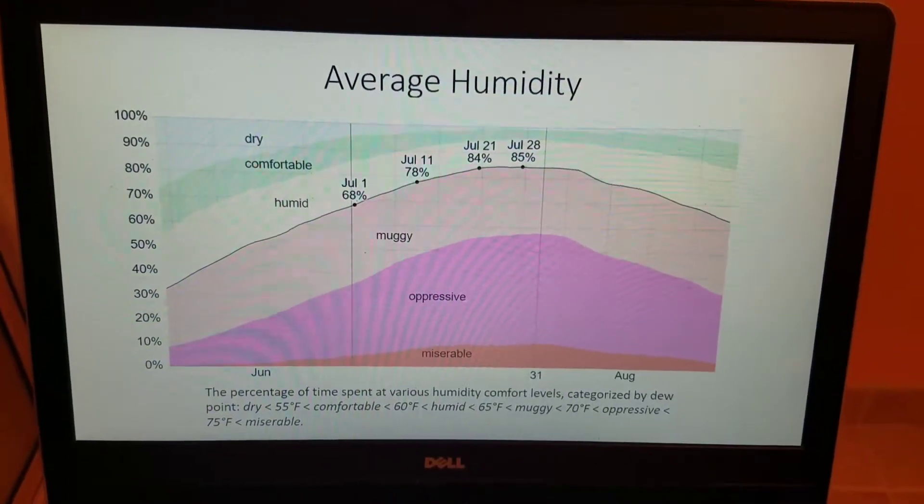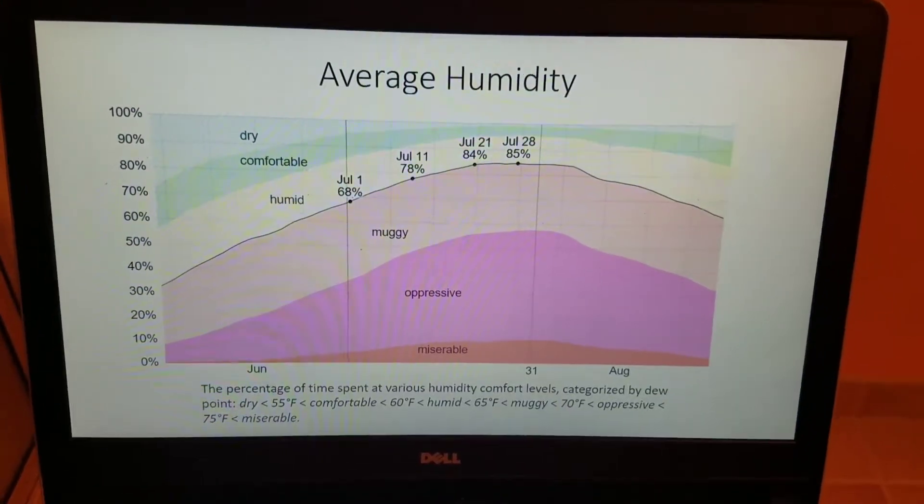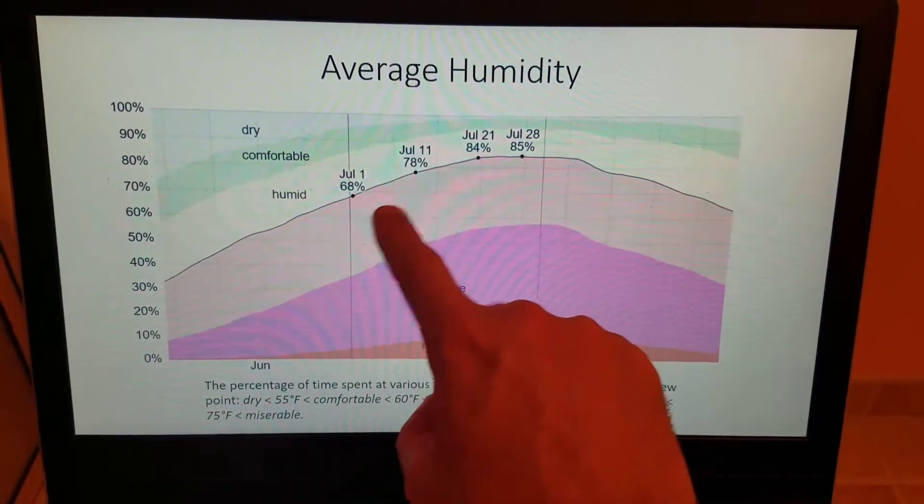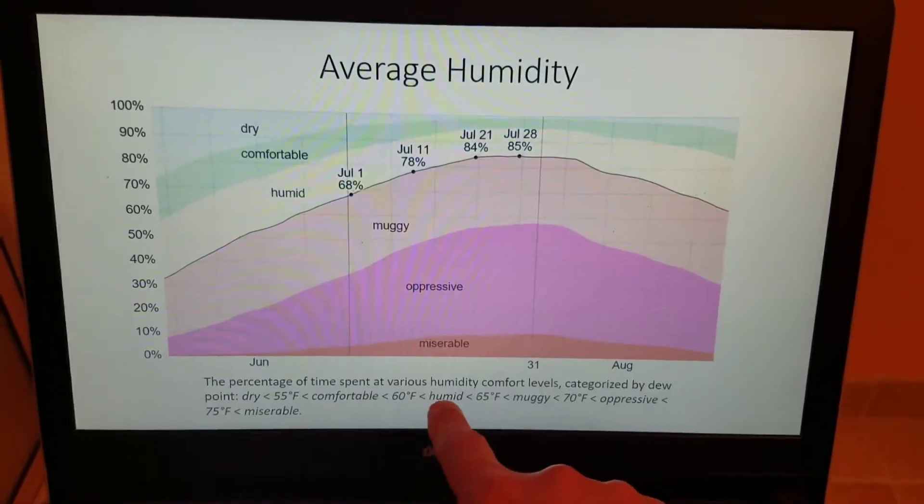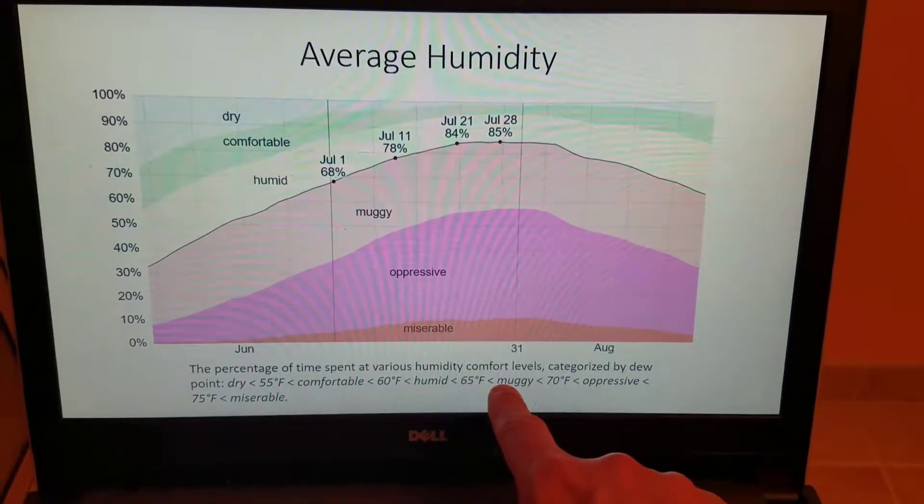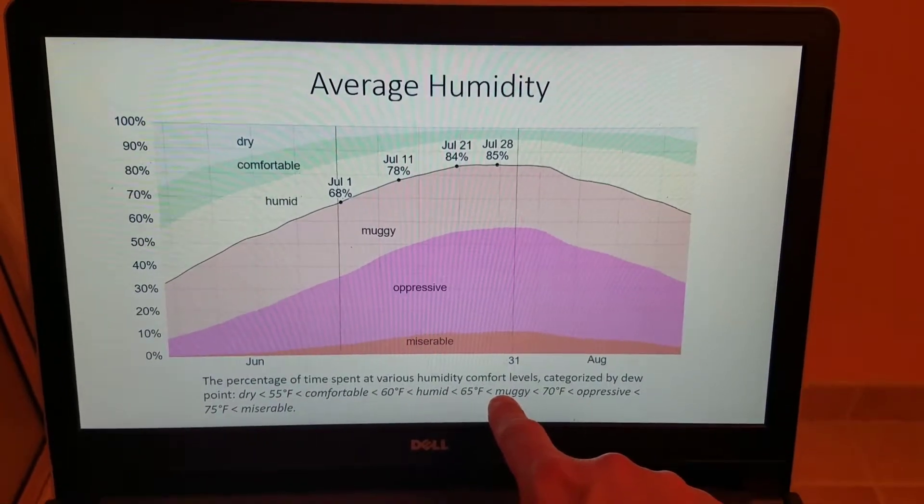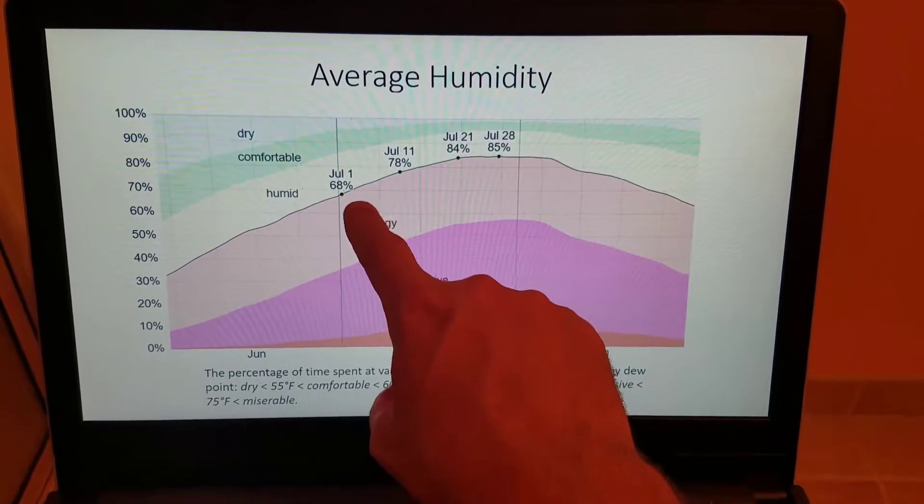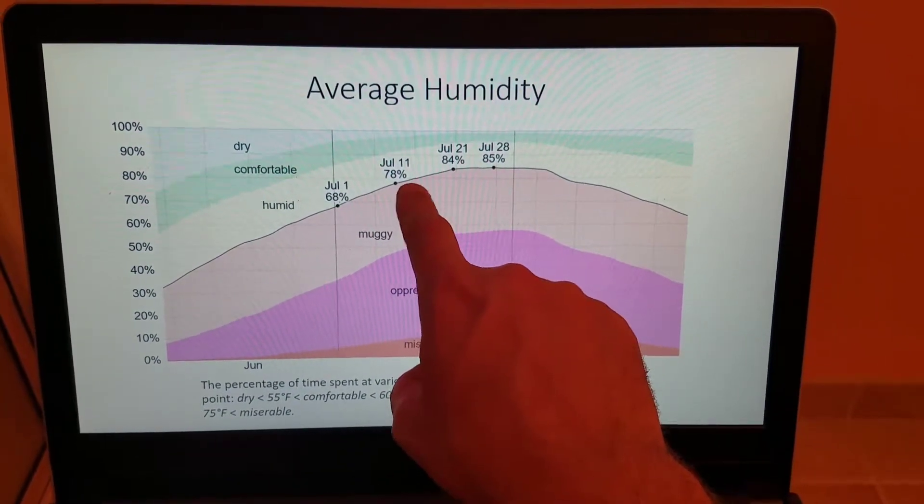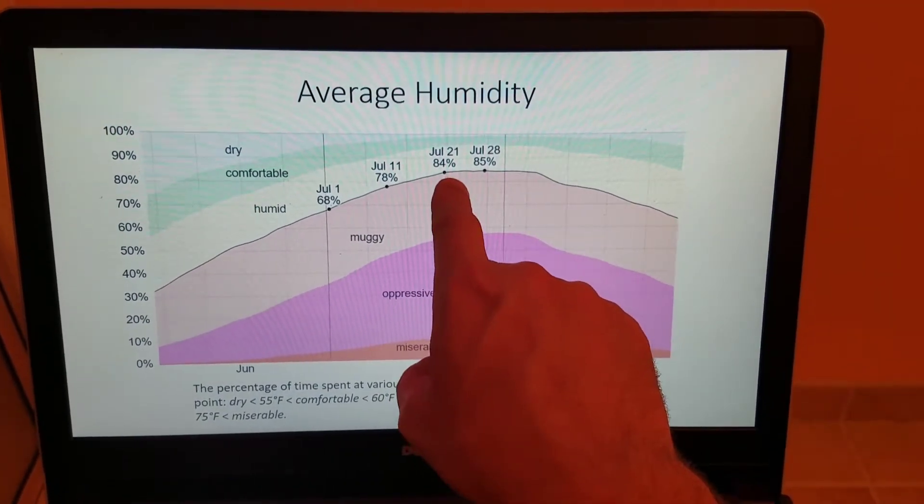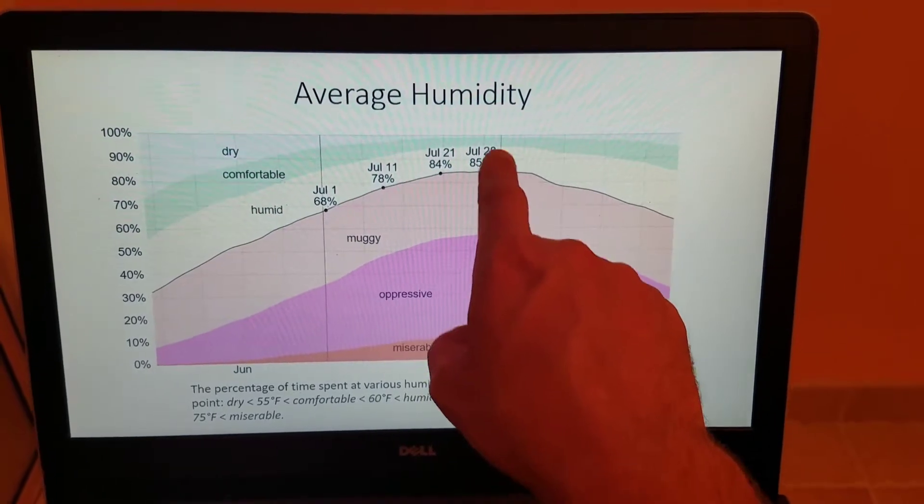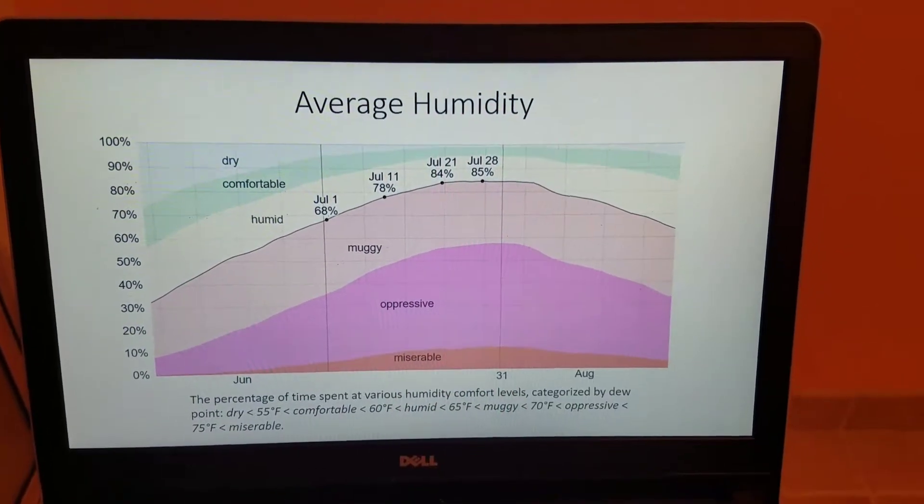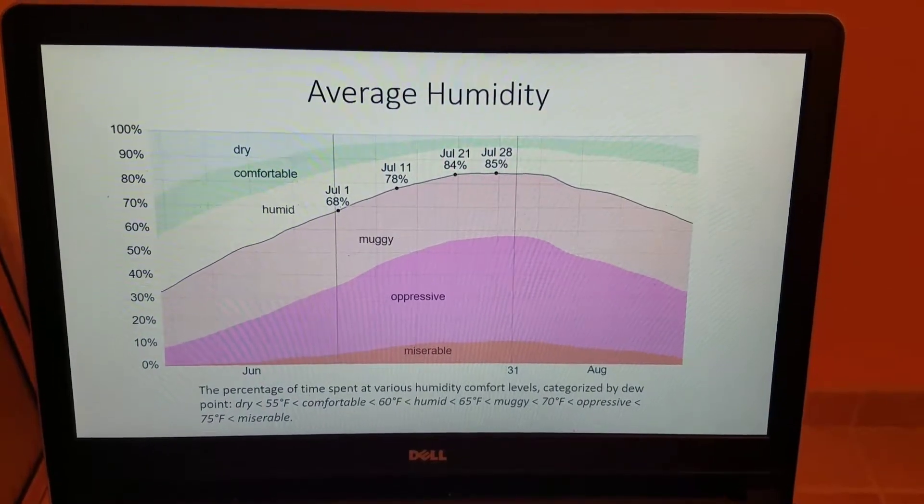Again, WeatherSpark breaks it down nicely. The categories at the bottom here, they break it down into, we're mainly most of the time 68 to 78, up to 84% average relative humidity, 85% relative humidity here. Just very, very muggy overall in the month of July. And that's really not going to change a whole lot.